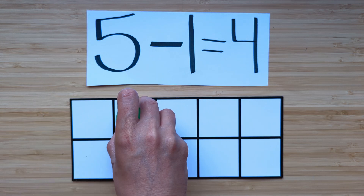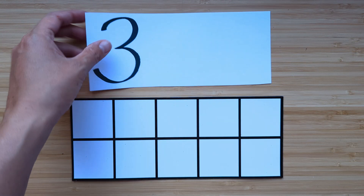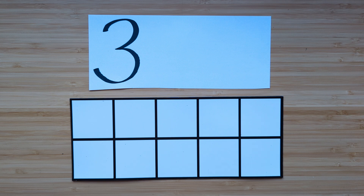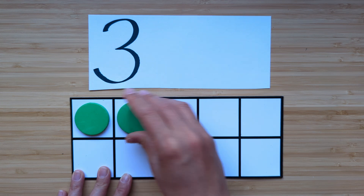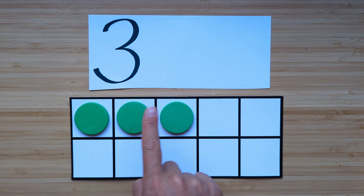Clear off your boards. Let's try another one. Make the number three. Point and count. One, two, three.